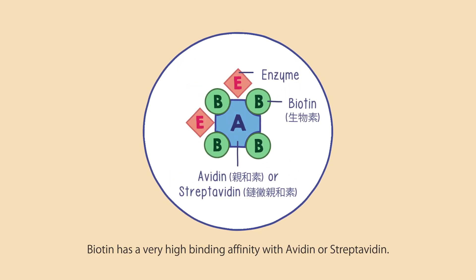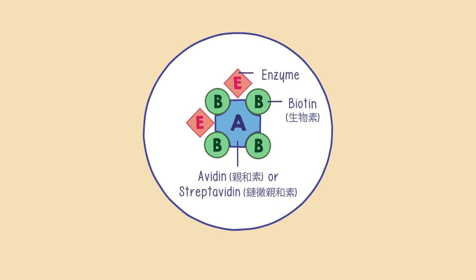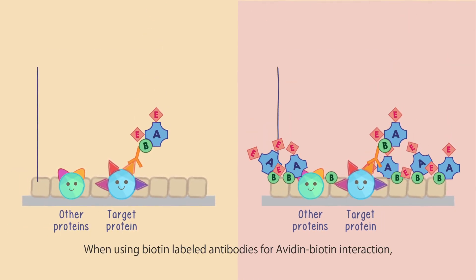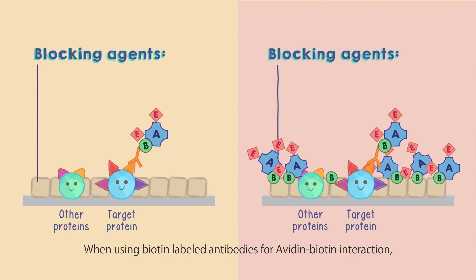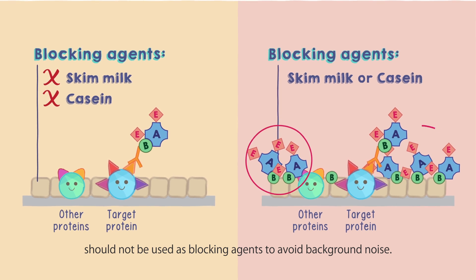Biotin has a very high binding affinity with avidin or streptavidin, which is often applied in specific binding between molecules. When using biotin-labeled antibodies for avidin-biotin interaction, skim milk and casein, which also contain biotin, should not be used as blocking agents to avoid background noise.